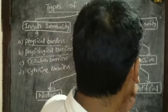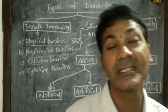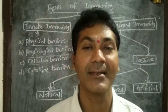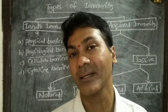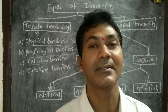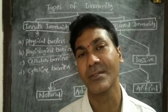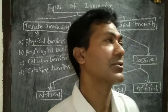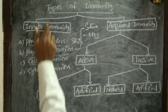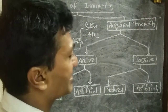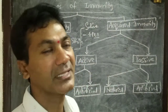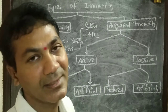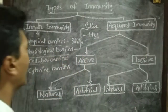Cells like B cells, T cells, and natural killer cells are common in everyone and are part of innate immunity acquired by birth, forming cellular barriers. This also includes lymphocytes, monocytes, phagocytes, and accessory cells. These all come under cellular barriers.